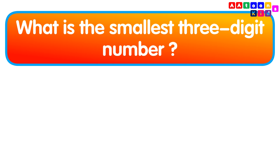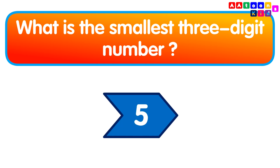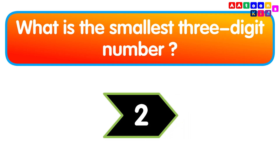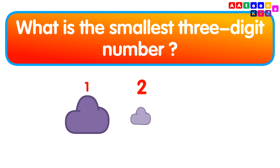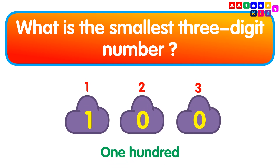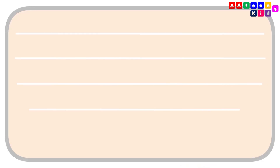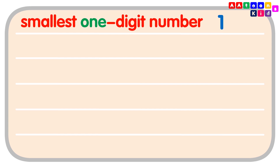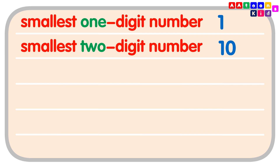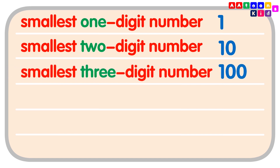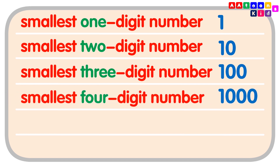What is the smallest three-digit number? 100 is the smallest three-digit number. The smallest 1-digit number is 1. The smallest 2-digit number is 10. The smallest 3-digit number is 100. The smallest 4-digit number is 1000.